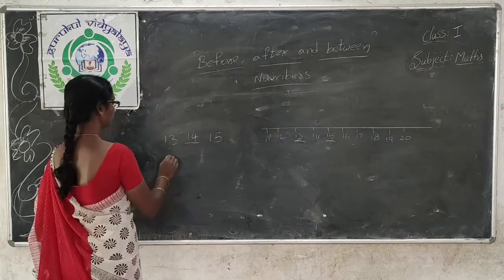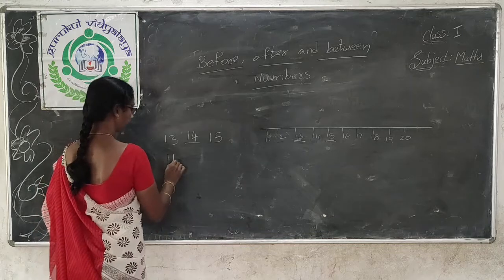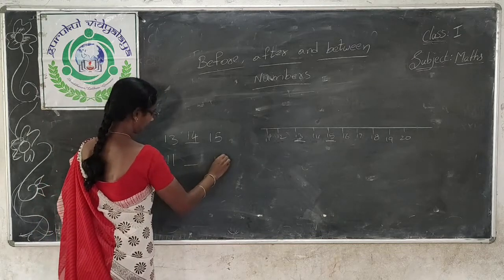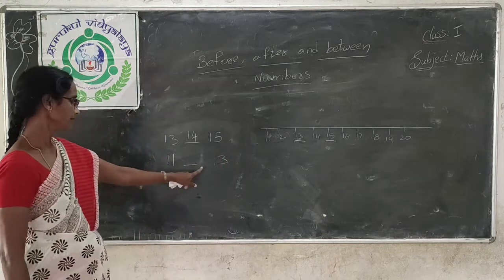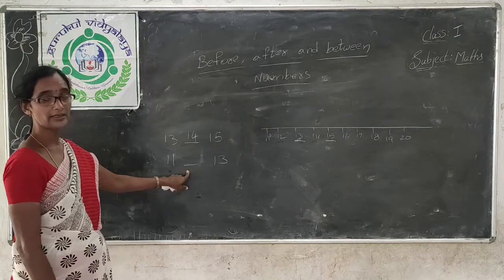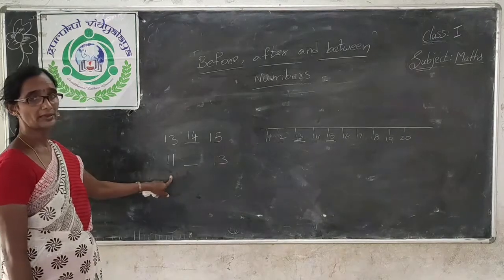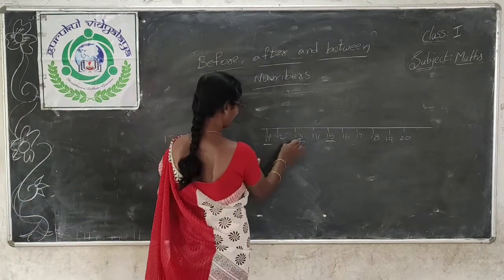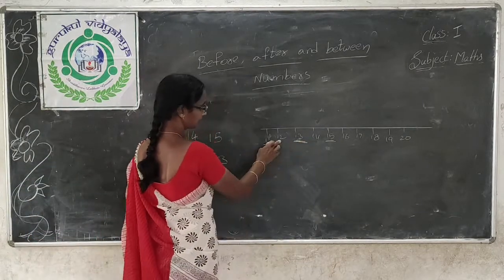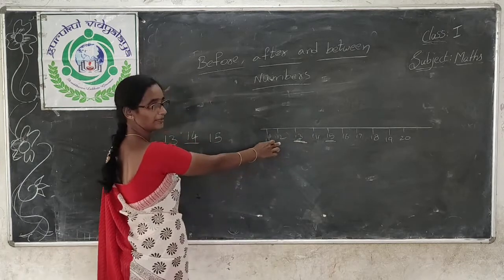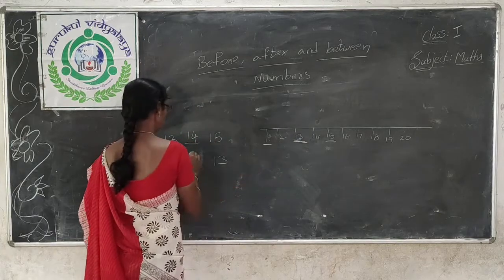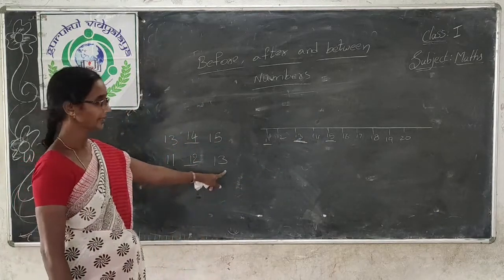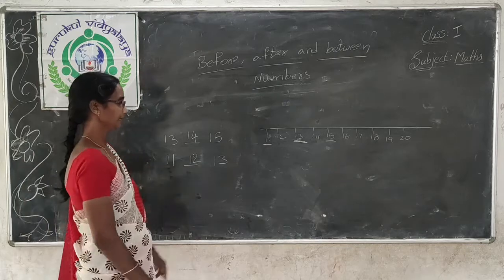And next one more example: 11 and 13. Which number comes between 11 and 13? 12. So 12 comes between 11 and 13.